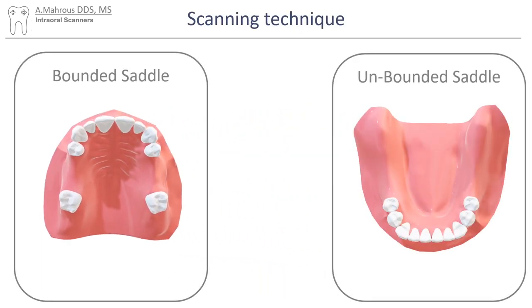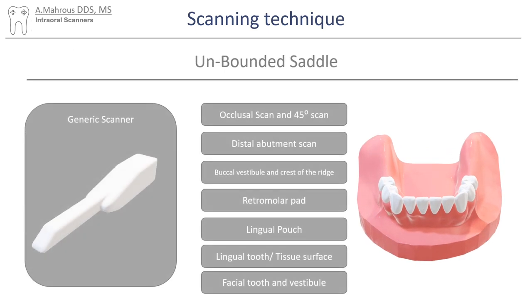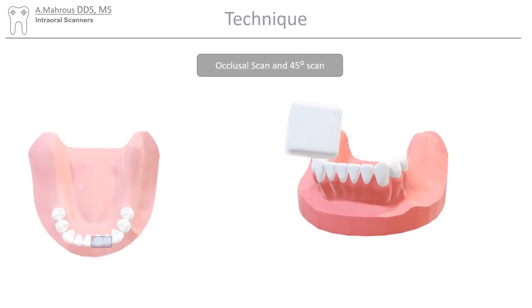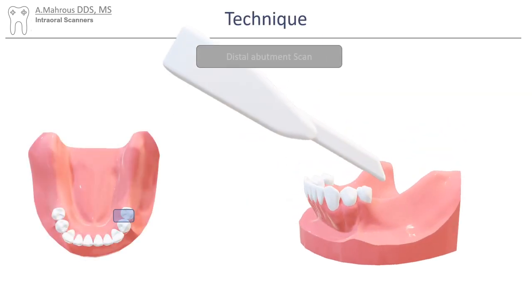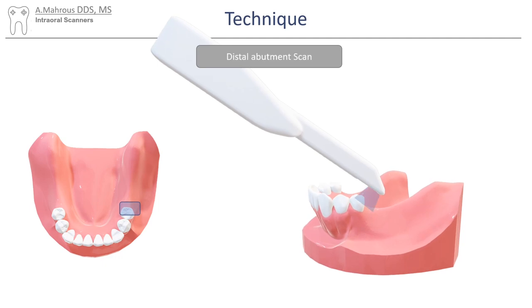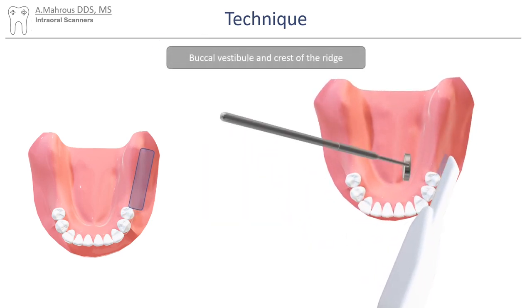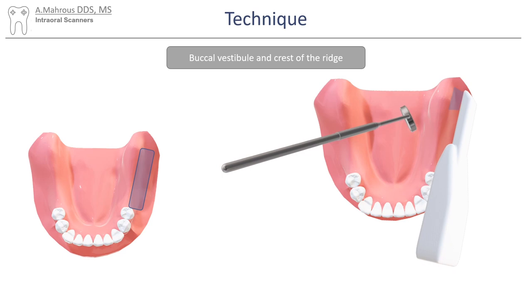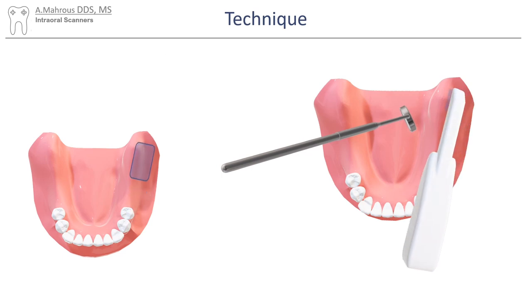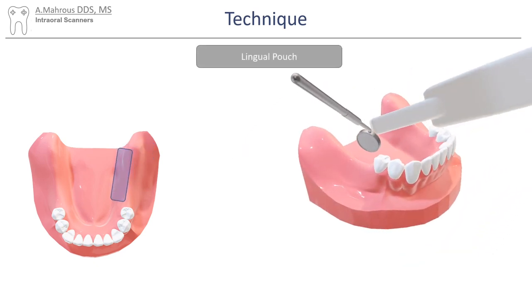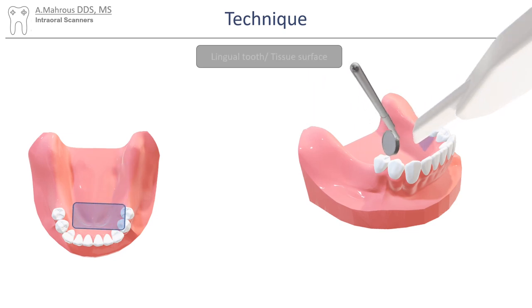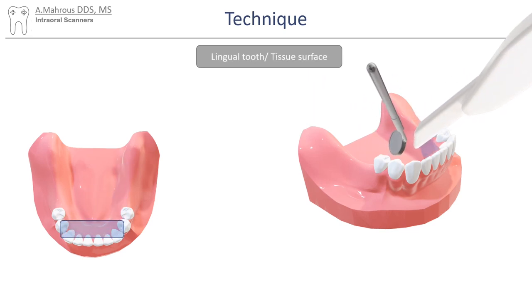Now let's go over the technique of scanning an unbounded saddle. Because this is also a mandibular arch, a lot more scans are needed to capture the entire vestibule. We'll start with an occlusal and 45 degree scan, just like we did with the maxillary arch. Once completed, we will transition to the distal surface of the distal most abutment. A mouth mirror will need to be used for the next area. The tongue can be retracted using the mouth mirror, while the buccal vestibule is being retracted using the ultragate retractor. The scanner is then moved to the retromolar pad area, then down to the lingual pouch area. The tongue needs to be retracted heavily at this point. The scanner is then moved anteriorly towards the anterior lingual surface. It's important to try and maintain constant retraction while scanning.